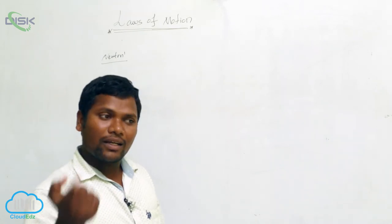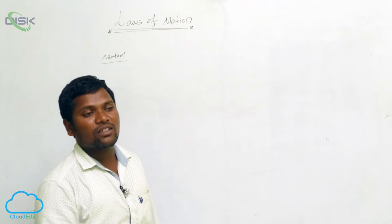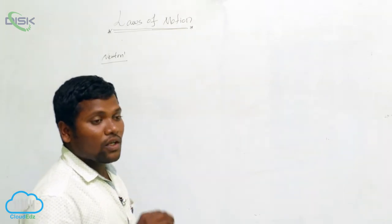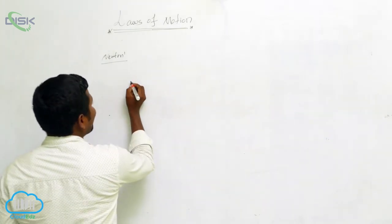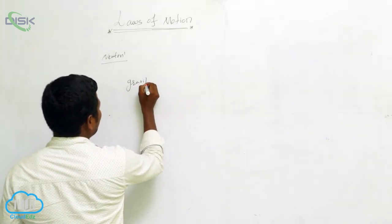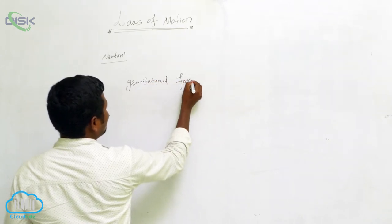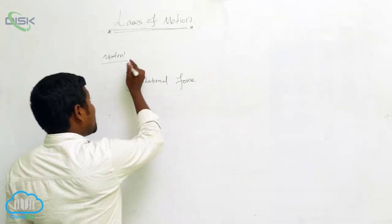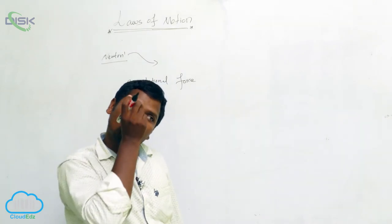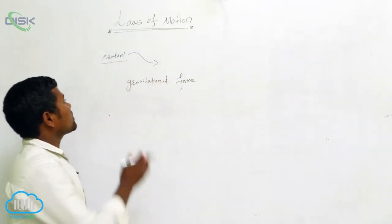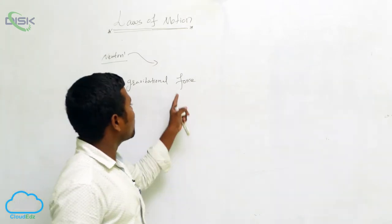He started thinking: why is the apple coming down? It could go up also, but why does it come down? He started investigation on that, and finally concluded that some force is pulling it downward. That force we call the gravitational force.